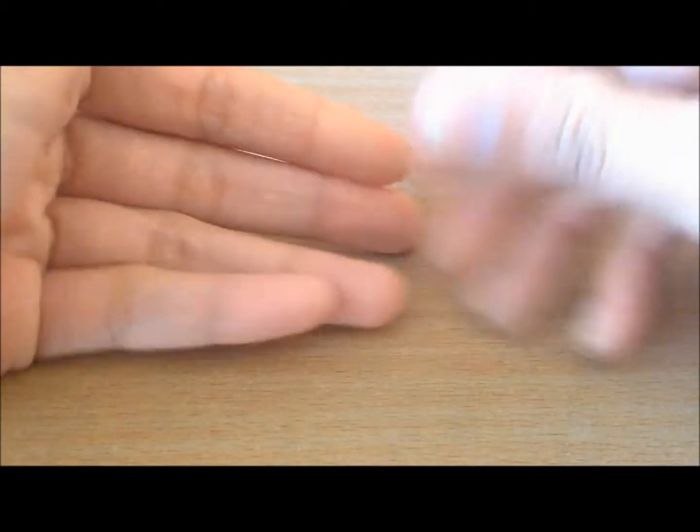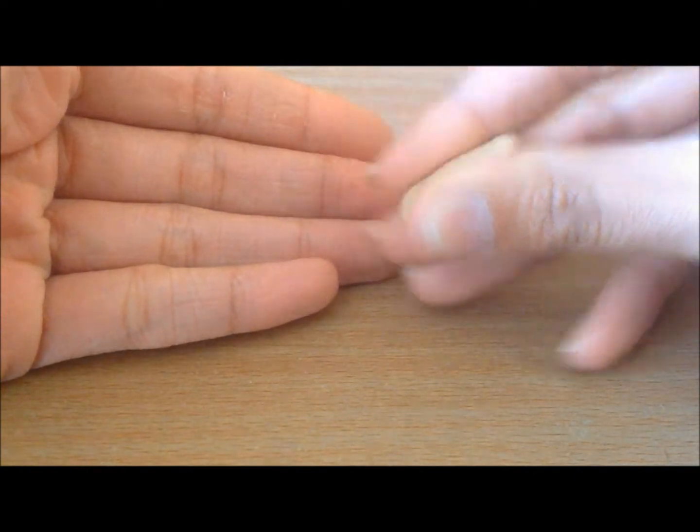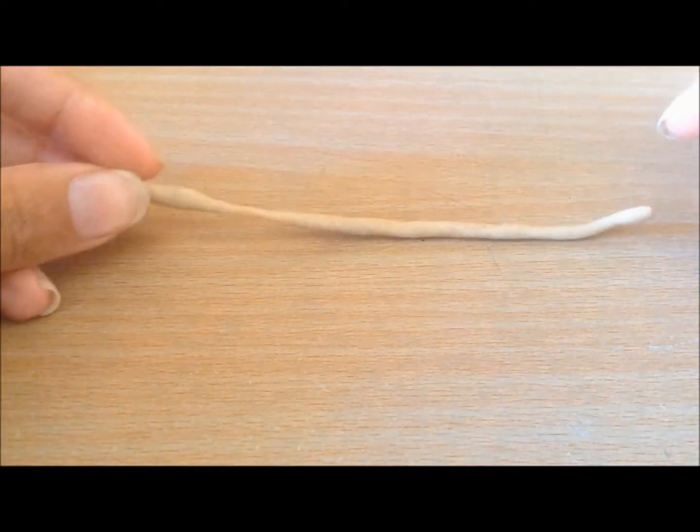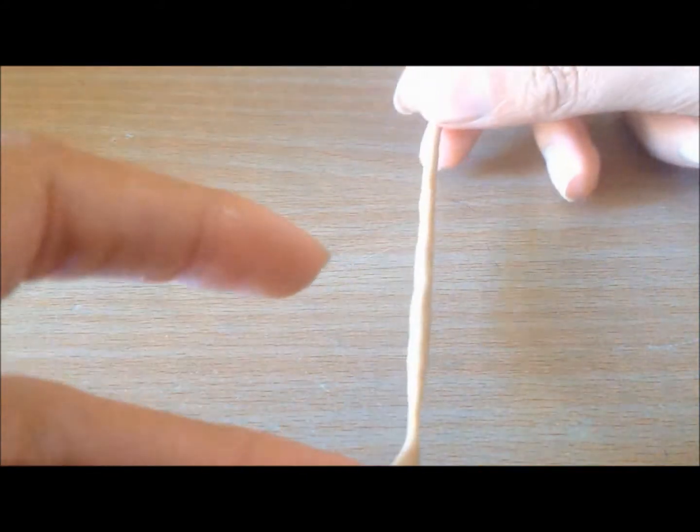Take your ball of clay and roll it out into a thin spaghetti. Once you have your spaghetti, flatten it out with your roller to achieve your desired thickness.